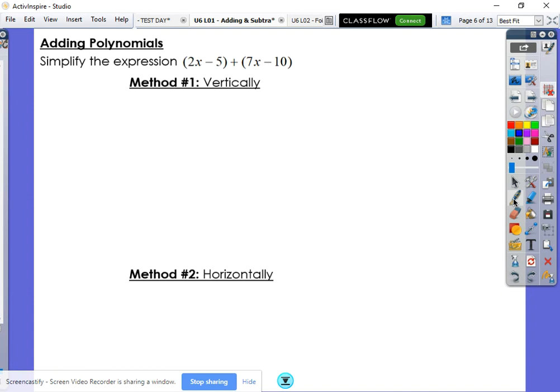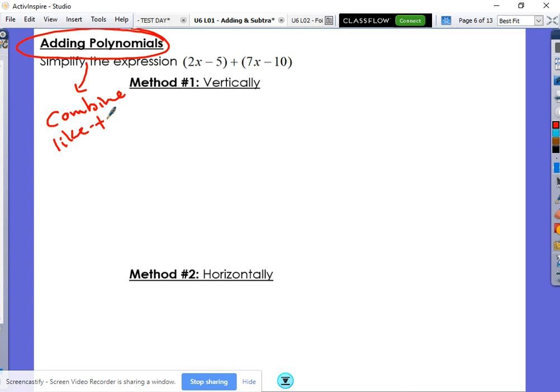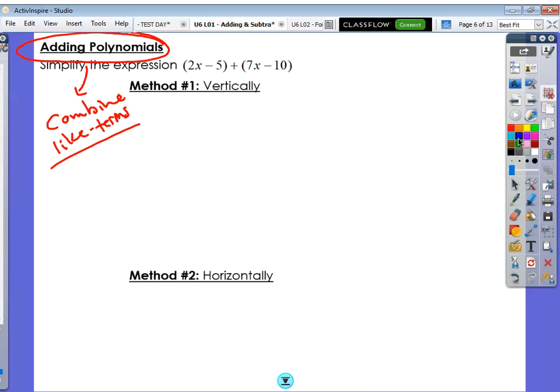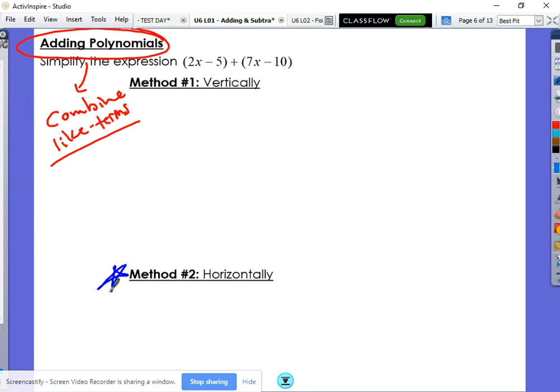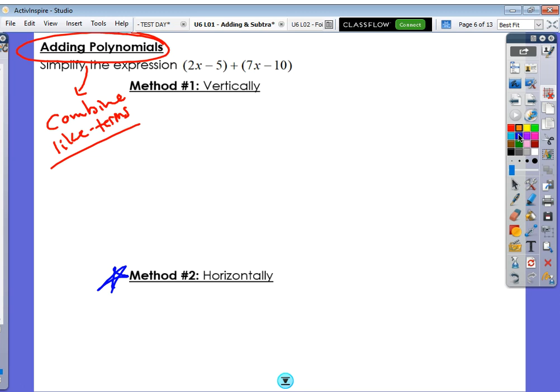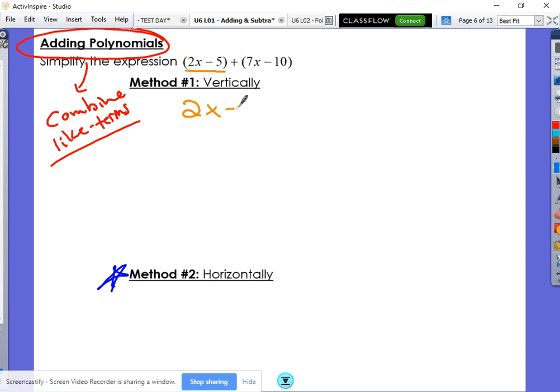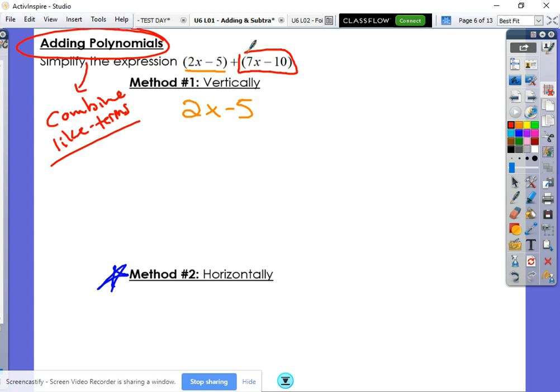Now we get to some actual math. And to be very honest with you, adding polynomials like we're about to do is just another way of saying combine like terms. So we have two methods for this. We have the vertical method and the horizontal method. Truth be told, you're probably going to settle with the horizontal method because that's the way that most of us do. But just so you can see what's going on, I will show you the vertical method. It looks a bit more like elementary school. So we take our first two terms, 2x minus 5. And then we take our second polynomial that we're adding, our second binomial, 7x minus 10.